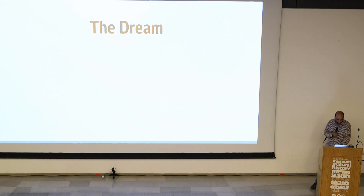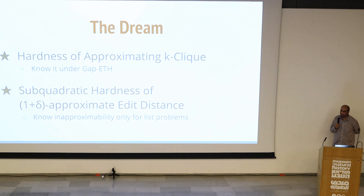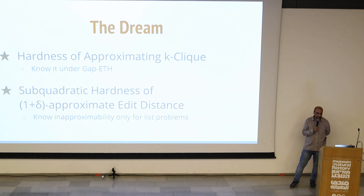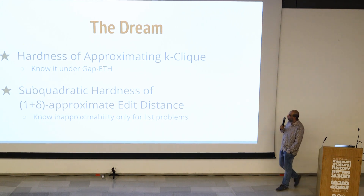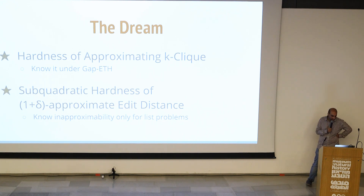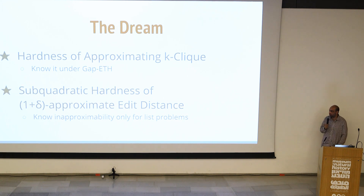The dream in hardness of approximation in P is to resolve two major questions. First, hardness of approximating K-clique: given a graph with a clique of size K, how hard is it to find a clique of size K over 2? We know such a result from gap ETH but don't know if it's W[1]-hard. Second, subquadratic hardness of 1+delta approximate edit distance: given two strings, we want to show time lower bounds for approximating edit distance to 1+delta, but currently all techniques only show lower bounds for list problems, not for just two strings.